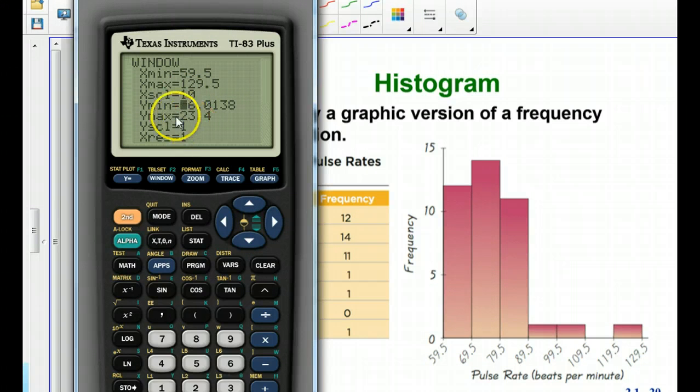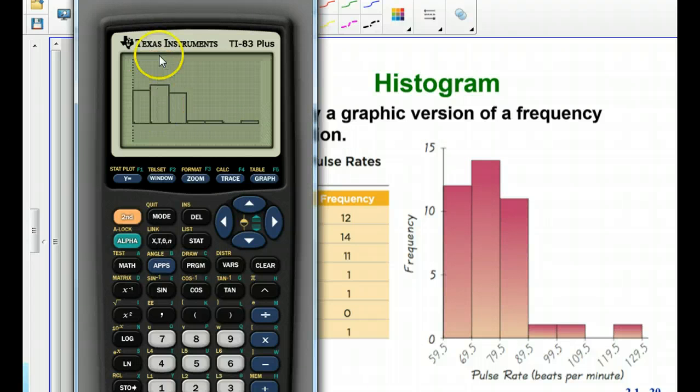Now I know just by looking at this that I don't need this Y max to go higher than 15. It's 23.4 now. If I hit graph, you can see the bars, there's all this negative space, this empty space up here.